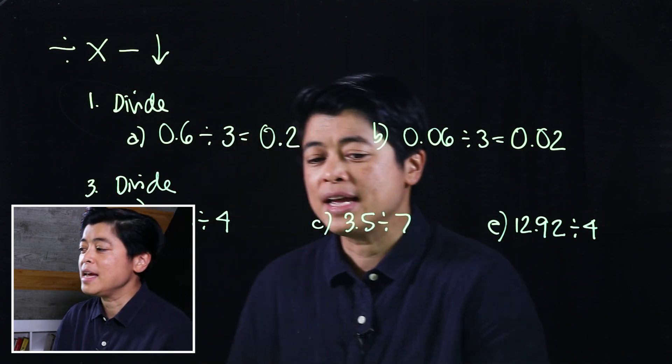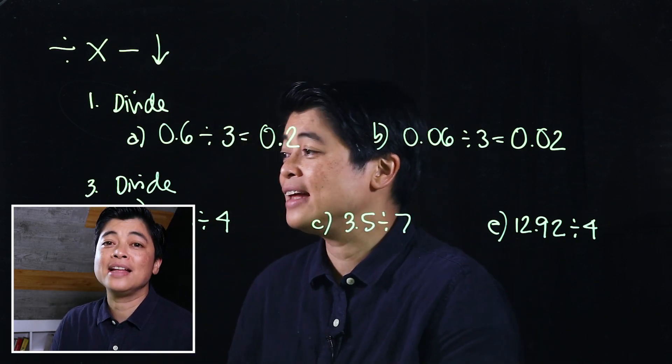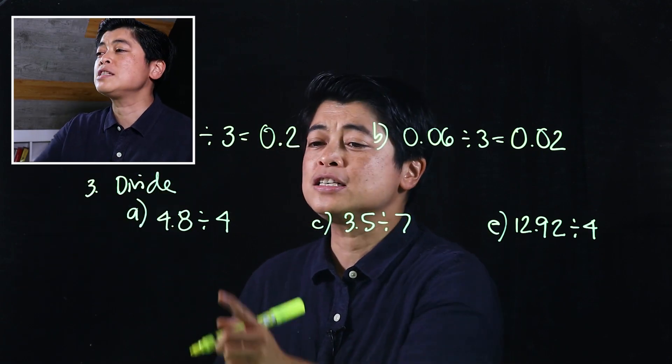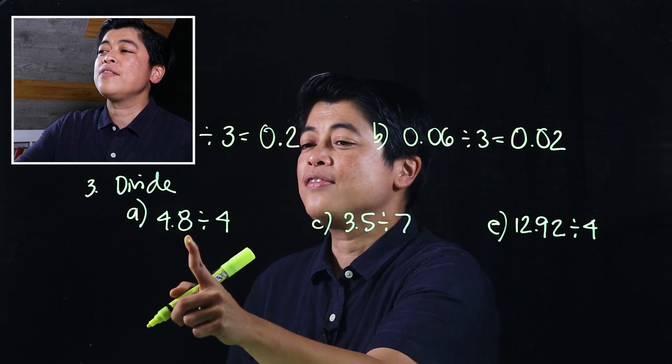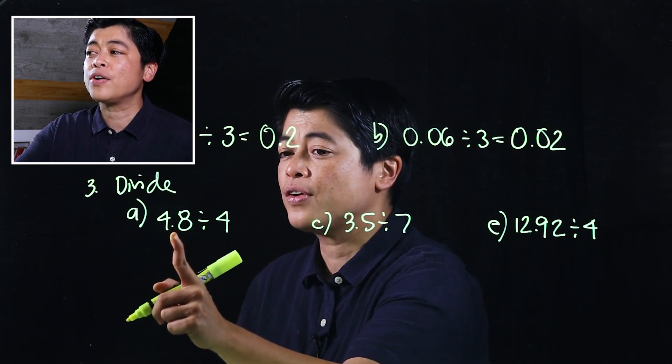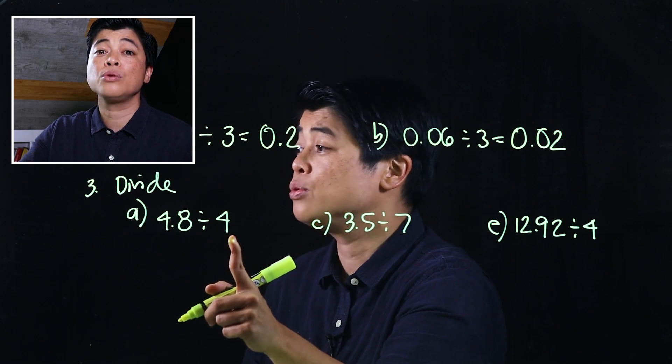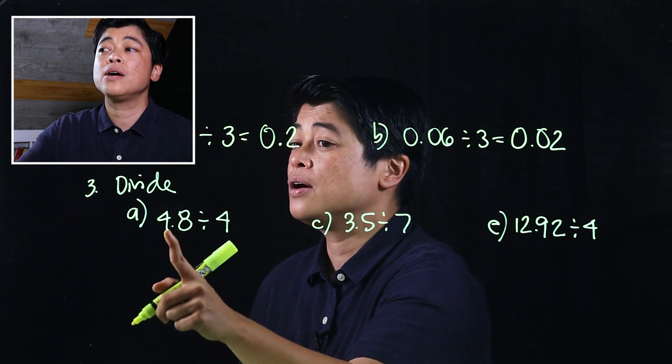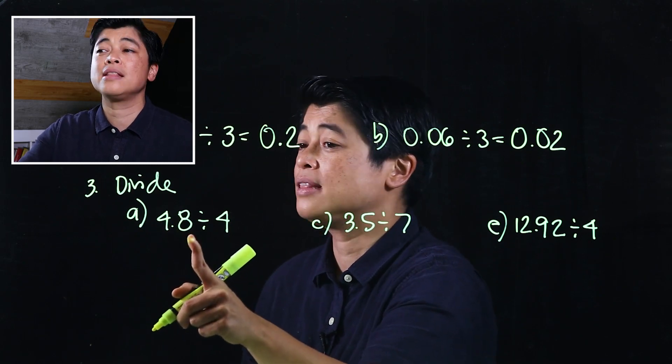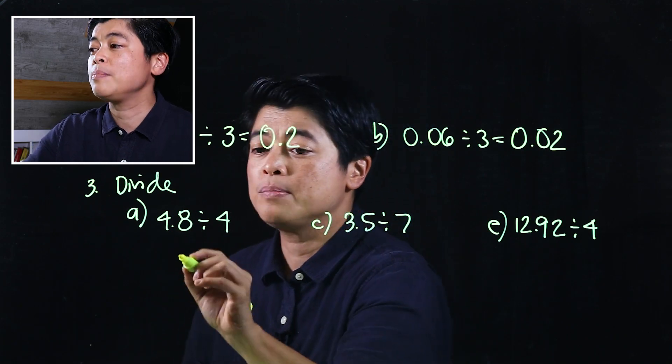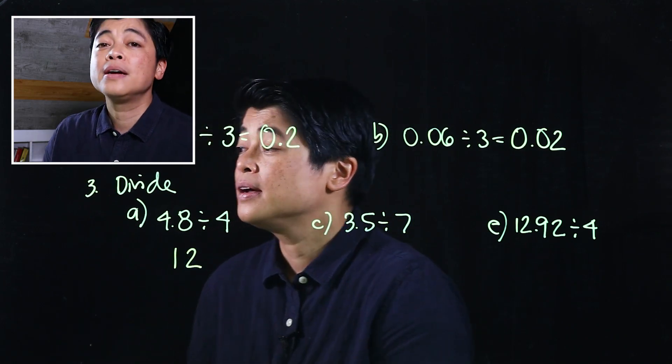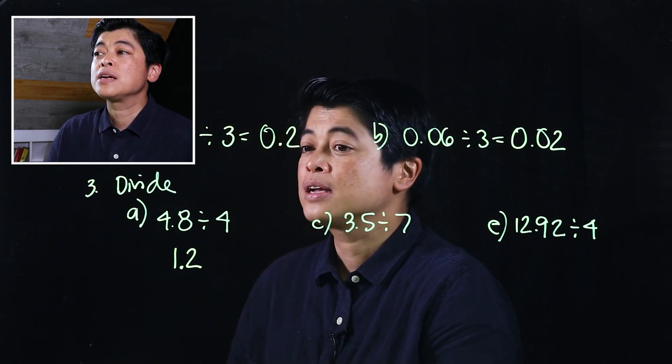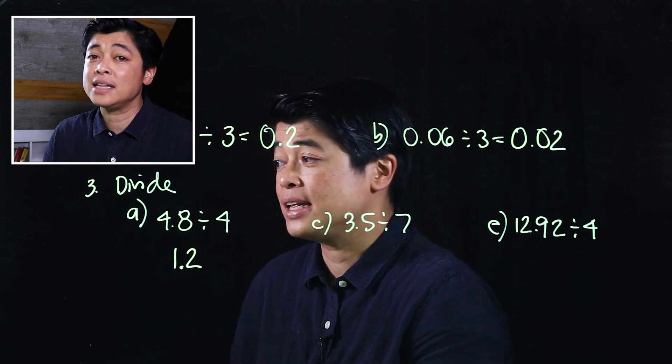In number 3, it asks us to estimate and then divide, but we won't do the estimate anymore. We will just go straight to the divide. In this problem here, if I remove the decimal, that would have been 48 divided by 4. I can do that mentally, therefore, that would be 4 divided by 4 is 1 and 8 divided by 4 is 2. So that means that's 12, but there's one decimal place, so that means we put the decimal after.